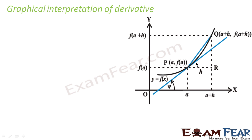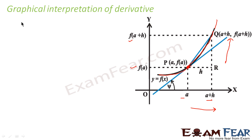This is the supposed graph — the red one. This is the graph for this function. If you see this function, the value of this function at a is f of a, and the value of this function at a plus h is f of a plus h. So if you go from here to here at this point, the change in y is this value. The derivative is nothing but dy by dx.